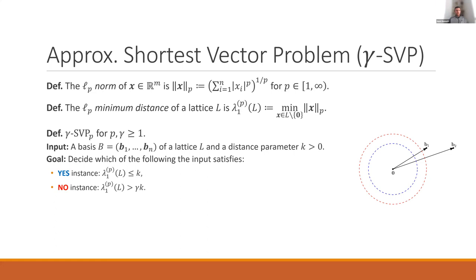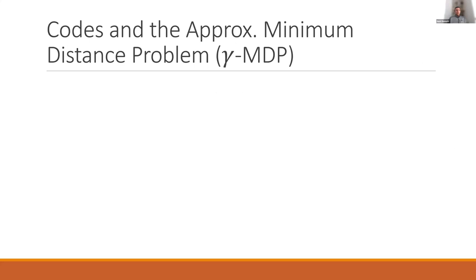The shortest vector problem, which is the most important computational problem on lattices, takes as input a lattice represented by a basis and some distance parameter k. The goal is to distinguish whether the lattice has a non-zero vector of norm at most k, or if all non-zero vectors have norm at least gamma·k. In this example, we're promised that either there's some non-zero vector inside the blue circle, or all non-zero vectors are outside the red circle. Looking at the full lattice generated by B1 and B2, this is a yes instance of SVP, because there are non-zero vectors inside the blue circle. The circles here correspond to working in the Euclidean norm where p equals 2, but in general those circles would be LP unit balls.